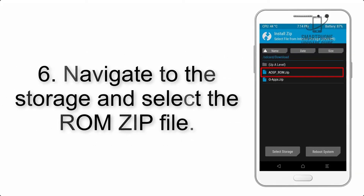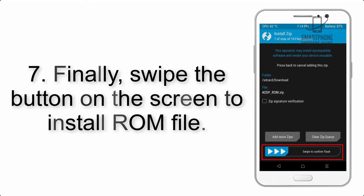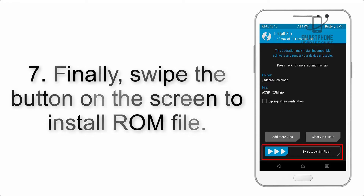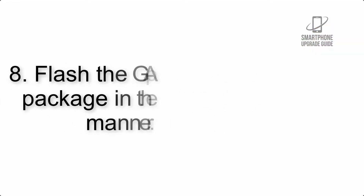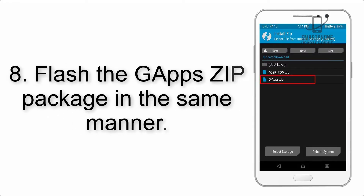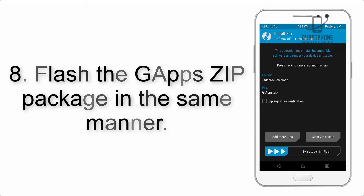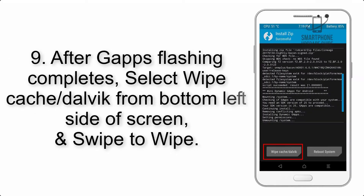Step 5: Go back to the recovery main screen and tap on the Install button. Step 6: Navigate to the storage and select the ROM zip file. Step 7: Finally, swipe the button on the screen to install the ROM file. Step 8: Flash the GApps zip package in the same manner.